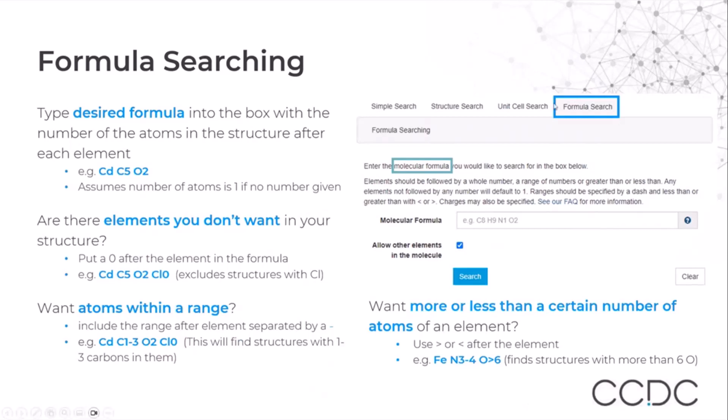Moving to formula search, this allows you to search for the molecular formula by entering it in this box. When you type the formula that you're interested in, you need to make sure to specify the number of atoms for each element. If you do not specify that, it will assume it is 1. In this case, we have Cd space C5 space O2, and it is important to put space in the right place.